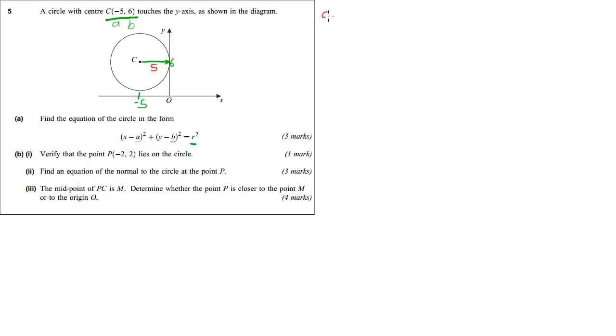Our radius must be 5 and then it's just a case of putting it in. Question A: we've got x minus 5, minus 5, all squared, then plus y minus 6 all squared is going to be equal to our radius squared. So we can say 25 or 5 squared because they want it to look like this.